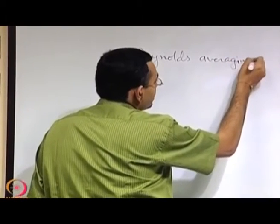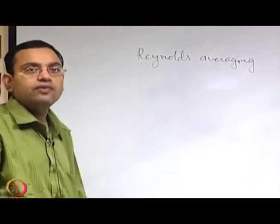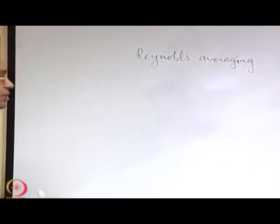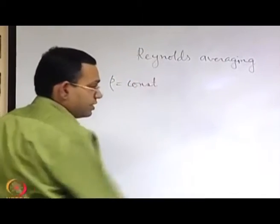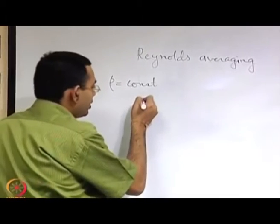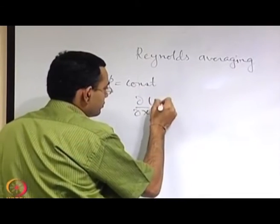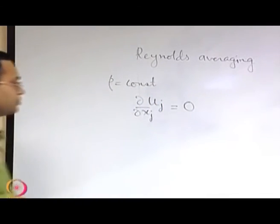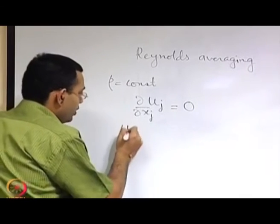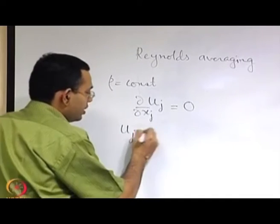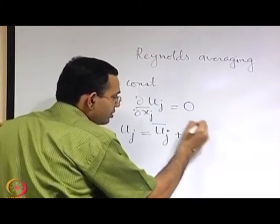The Reynolds averaging process starts with the basic well-known form of the governing equations. For example, we start with the continuity equation, assuming that density is constant. In the first step we decompose the variable — here the velocity — into two parts: one is the mean and another is the fluctuation over the mean.